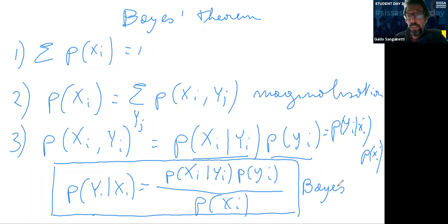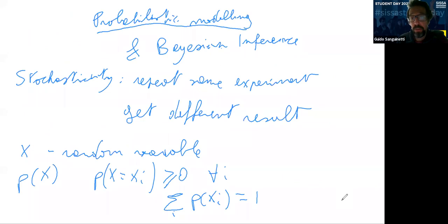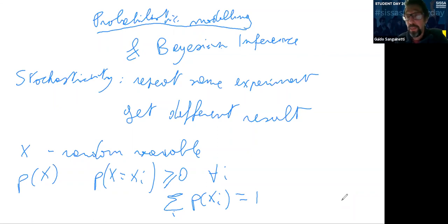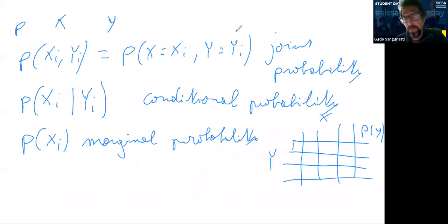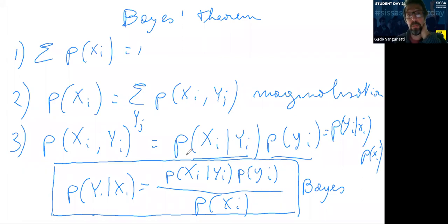Let's take the first mini break. I've done a very quick run-through: stochastic modeling, random variables — the basic concept is you shift from modeling the precise value of a variable to modeling the distribution of possible values — and how random variables connect to other random variables. We've listed the basic properties of probabilities, including Bayes' theorem. Any questions?